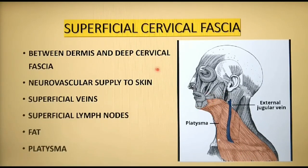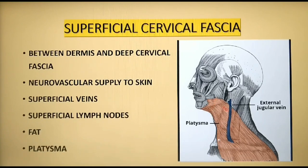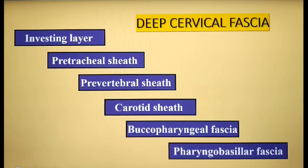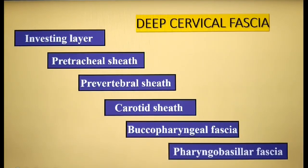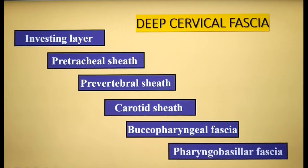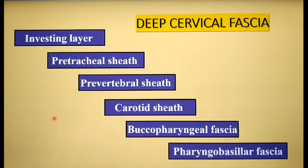It is beneath the superficial cervical fascia that you can find the external jugular vein. Beneath the superficial cervical fascia you find the deep cervical fascia, which lies deep to the superficial cervical fascia and the platysma muscle.